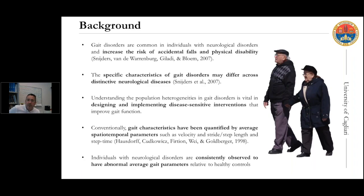Gait disorders are very common in individuals with neurological disorders. Not only do gait disorders increase the risk of accidental falls and physical disability, but they also represent a serious issue in terms of quality of life. Any neurologic disease has specific and peculiar characteristics of gait disorders, and it's important to have information about gait disorders, especially to monitor disease progression and to assess the effectiveness of pharmacologic and rehabilitative treatments.